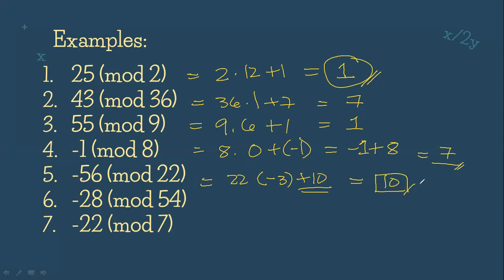Actually, there's a shortcut if you're confused by this process. The shortcut here is negative 56, you just do continuous addition. So plus 22, that gives us negative 34. Plus 22, that gives us negative 12. Plus 22, that gives us 10. So the answer is 10. As you can see, this is the same.